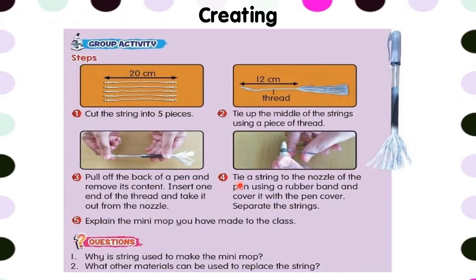Step 4: tie a string to the nozzle of the pen using a rubber band and cover it with the pen cover. Separate the strings. And step number 5: explain the mini-mob you have made to the class. Okay, so step number 5 you don't need to do.